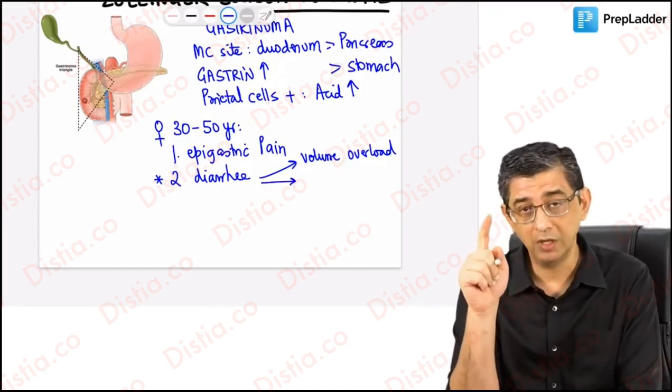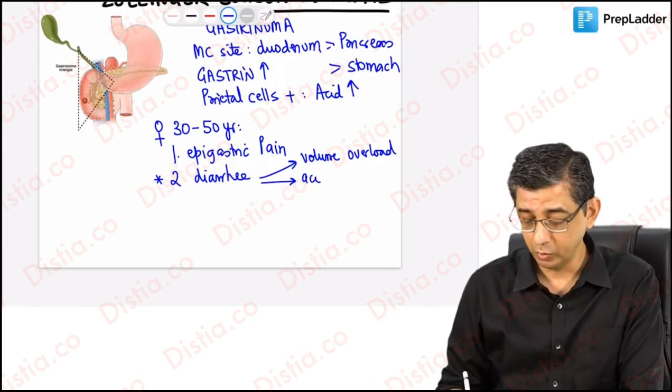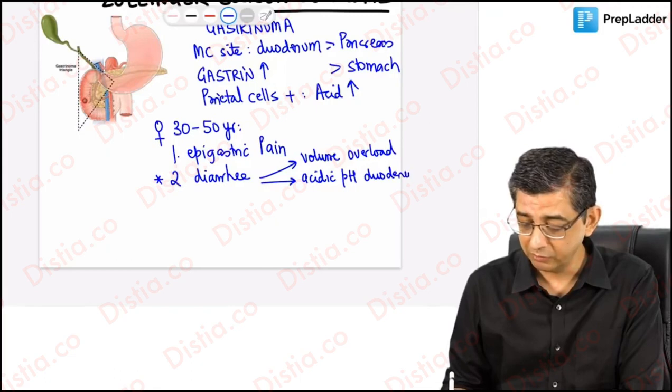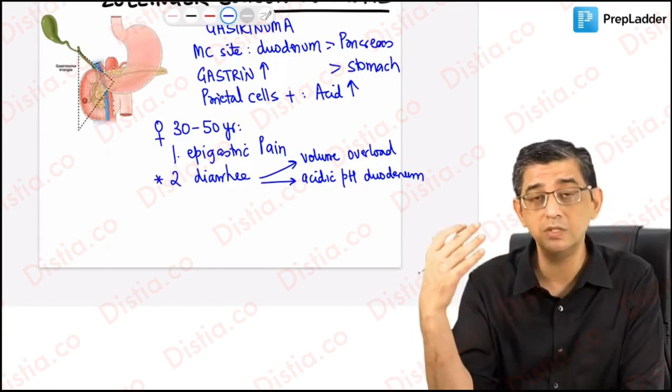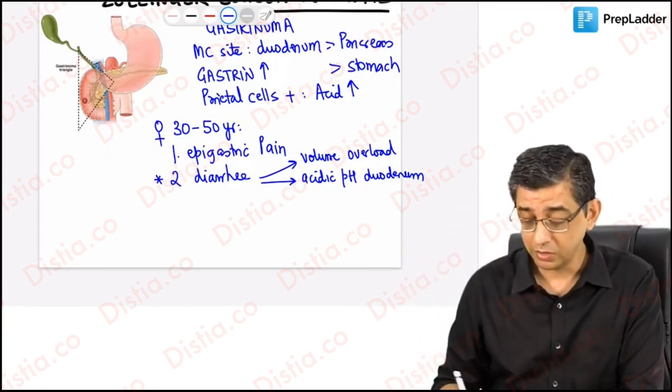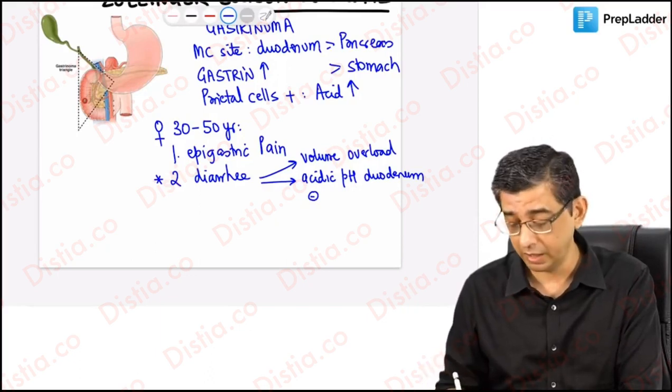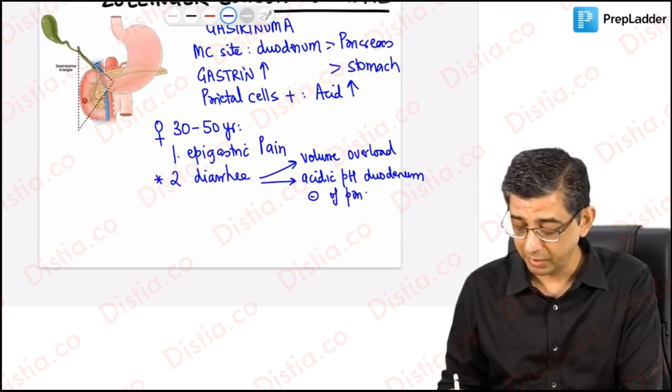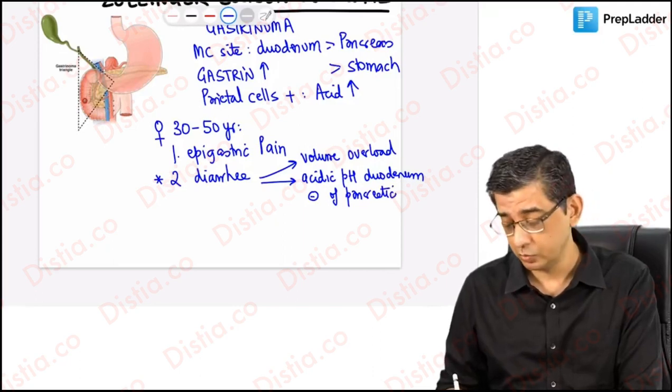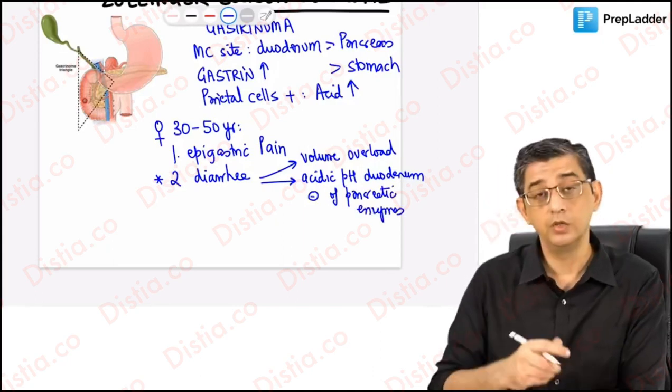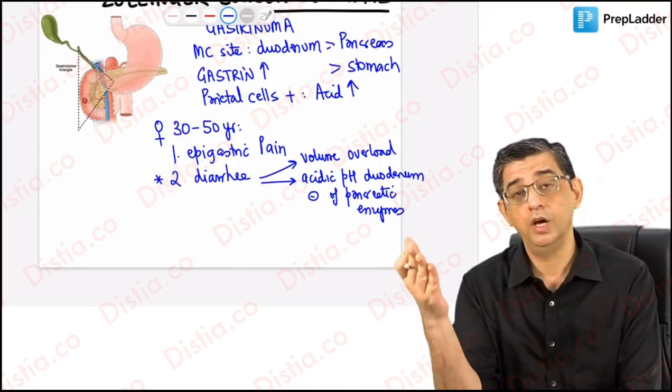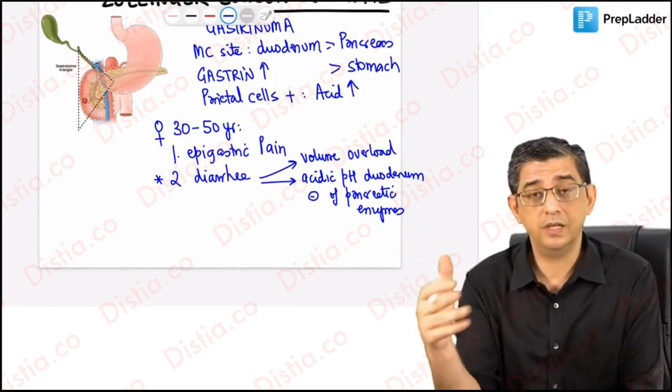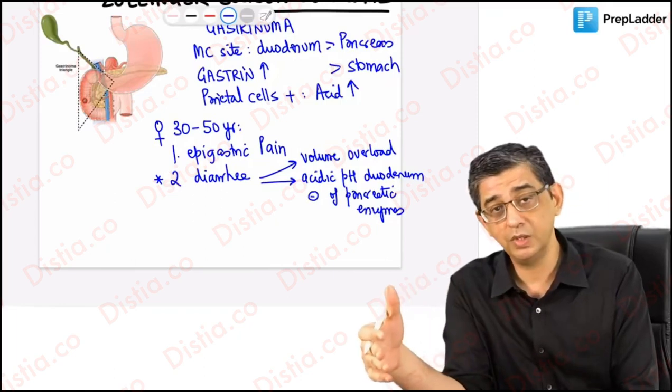In this particular patient, the more acid will contribute to acidic pH in the duodenum. Please appreciate that in the duodenum we have released bile that causes alkaline pH, but here the more acid is causing acidic pH. It will cause inactivation of the pancreatic enzymes. The pancreatic enzymes can be like amylase or lipase. Because the pancreatic enzymes are inhibited, sugar won't be absorbed and fat may not be absorbed. So the condition will be akin to osmotic diarrhea.